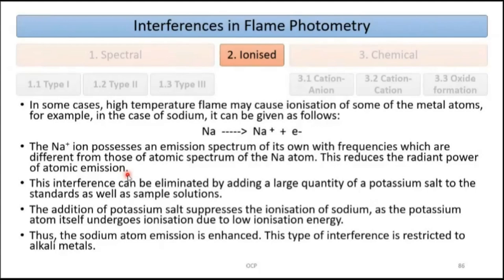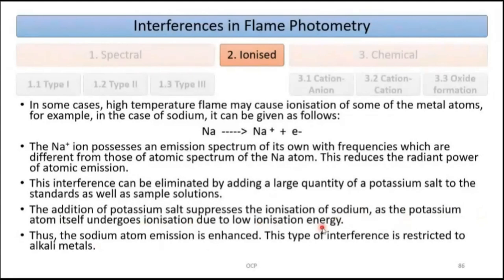This interference can be eliminated by adding a large quantity of potassium salt to both the standard and sample solution. Potassium has lower ionization energy, so it ionizes preferentially instead of sodium, suppressing sodium's ionization. The addition of potassium salt suppresses sodium ionization; sodium atom emission is enhanced. This type of interference is restricted to alkali metals only.